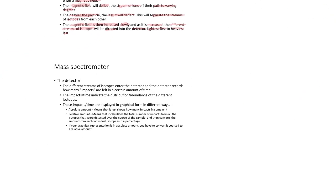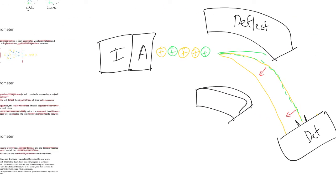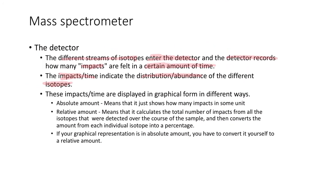The detector records how many impacts there are over a certain amount of time — effectively hits per second. The impacts per time indicate the distribution or abundance of the different isotopes. For example, if there are three of the yellow lighter isotopes and only two of the heavier green ones, there will be more hits per second for the yellow ones — maybe three per second — and less for the green ones — maybe two per second. That's what the detector reads, and from that you can work out the percentage of each isotope.